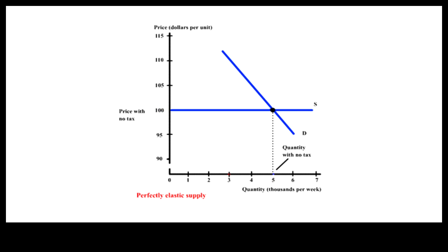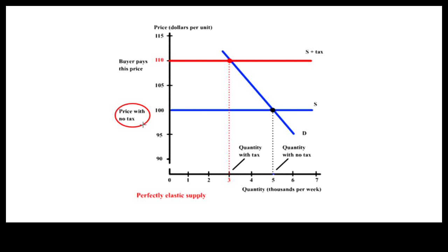On the other extreme, if sellers are willing to supply an unlimited amount at a fixed price, the supply curve is a horizontal line, indicating perfectly elastic supply. After tax, the fixed supply price is simply raised by the full amount of the tax, while the fixed price retained by the seller stays the same. If demand remains unchanged, buyers end up paying the full share of the per-unit sales tax.